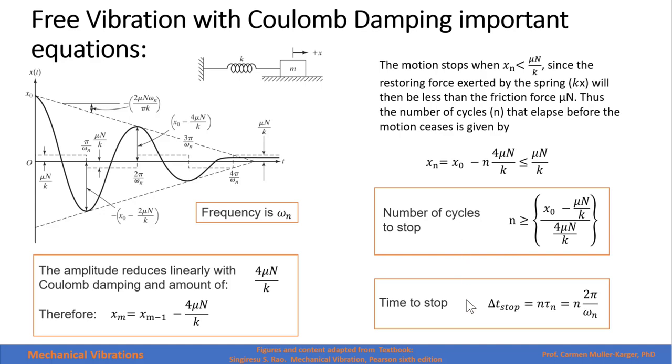The time to stop will then be equals to n, the cycles to stop, times the period. And remember, the period is 2π over ωₙ. And we can read the period in the graph if we have an experimental curve.